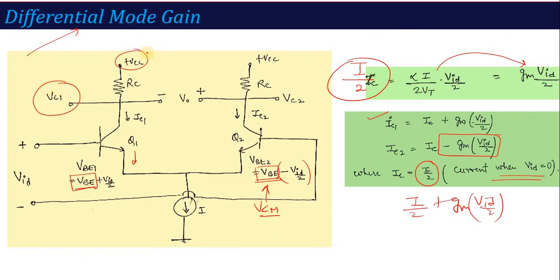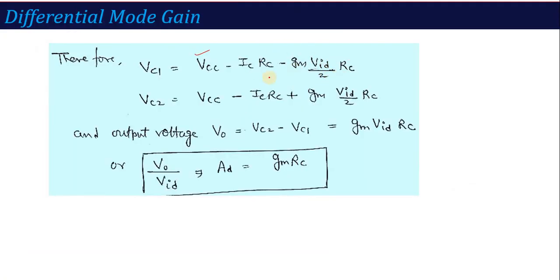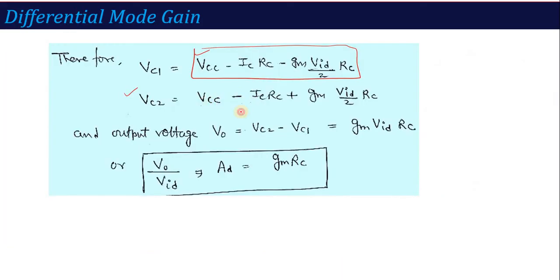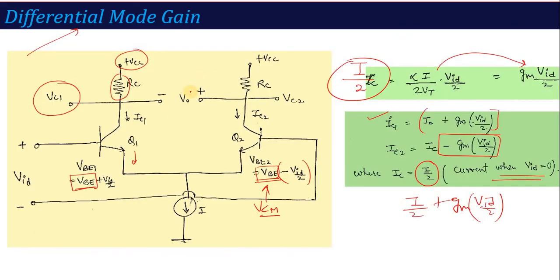So here total collector current in transistor Q1 that flows is IC plus Gm VID by 2, and the one that flows in transistor Q2 is IC2 equal to IC minus Gm VID by 2. Now if I know the total collector current, then I can calculate this output voltage, that is VC1. What will it be? From VCC you subtract the drop here, that is ICRC, where what is IC1? IC1 is basically this total current. So what is the value of VC1? VC1 is equal to VCC minus ICRC minus Gm VID by 2 into RC. So the entire current you got here. Similarly, if you want to write the value of VC2, VC2 will be VCC minus IC2 RC. So the value of IC2 is this; if you multiply it by RC, what will happen? VCC minus ICRC and minus minus will give you plus Gm VID by 2 into RC.